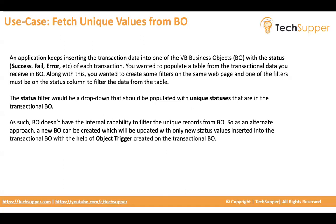As an alternate approach, you can create a new business object with a single column and maintain each unique status in it. You need to create an object trigger on your transactional BO which checks whether the status value already exists in your status BO. If it does not exist, insert the new status; otherwise, leave it. You can then use that status BO to populate your dropdown. This is how this can be achieved.